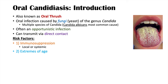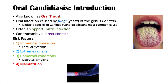The second risk factor is extremes of age — very young and very old. Very young individuals have a reduced or naive immune system that hasn't fully developed, making them more at risk. As individuals get older their immune system weakens, also increasing risk. Other comorbid conditions like diabetes and smoking can cause immunosuppression, and malnutrition — being deficient in certain vitamins — also increases risk for oral candidiasis.